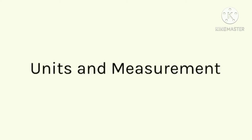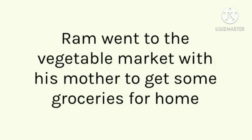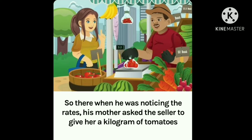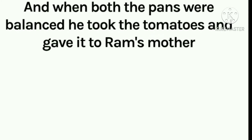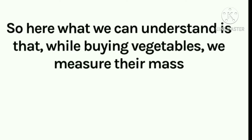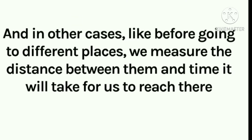So let us consider units and measurements. Ram went to the vegetable market with his mother to get some groceries for home. When he was noticing the rates, his mother asked the seller to give her a kilogram of tomatoes. So the seller took a kilo stone and placed it in a pan, and in the other pan he placed the tomatoes. When both pans balanced, he gave the tomatoes to Ram's mother. While buying vegetables, we measure their mass, and in other cases, like before going to a different place, we measure the distance between them and the time it will take to reach there.